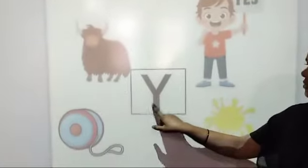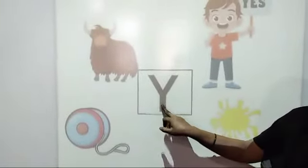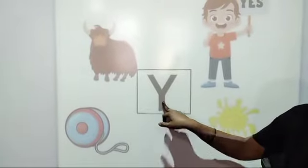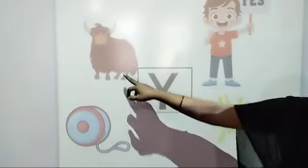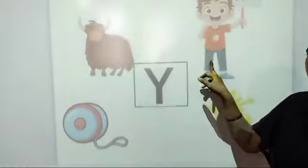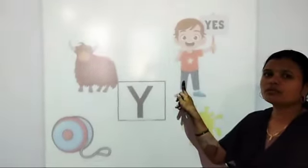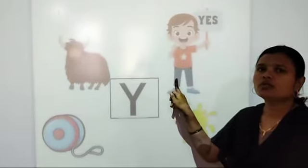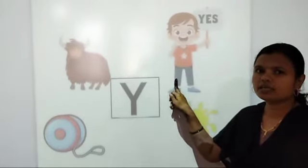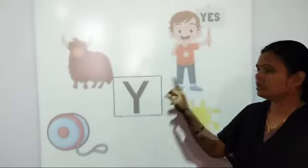Chalo come see here. See this is Y. Which alphabet is this? This is Y and Y... Y yes. Agar hume mama papa ne kuch bola ya ki kuch poochha toh we are saying yes. Haan bolte hai na that is yes. Y yes.